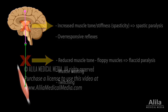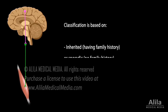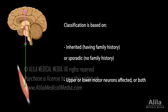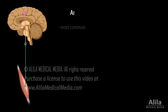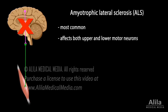The many forms of motor neuron disease are classified according to whether the loss of neuron function is inherited or sporadic, and whether the condition affects upper or lower motor neurons. The most common form is amyotrophic lateral sclerosis, ALS, which affects both upper and lower motor neurons.